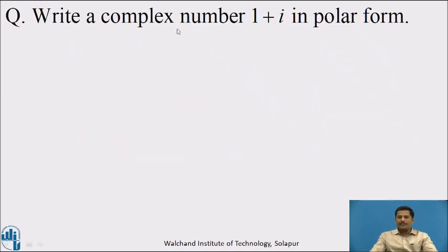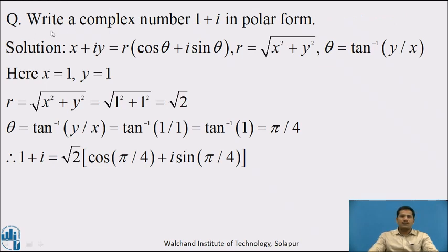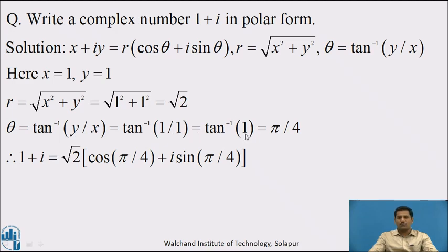Pause this video and write the complex number 1 + i in polar form. The answer: comparing with x + iy, x = 1 and y = 1. r = √(1² + 1²) = √2, and θ = tan⁻¹(1/1) = tan⁻¹(1) = π/4. Therefore 1 + i in polar form is √2·(cos(π/4) + i·sin(π/4)).